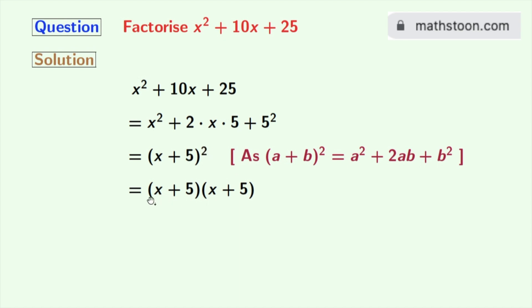So finally we get x squared plus 10x plus 25 as the product of x plus 5 and x plus 5.